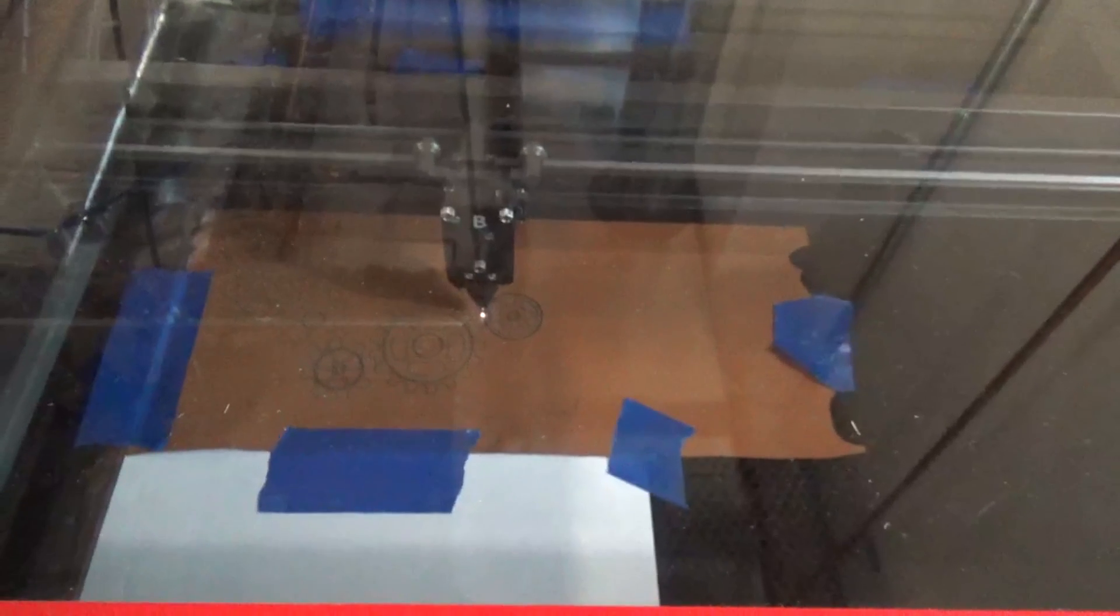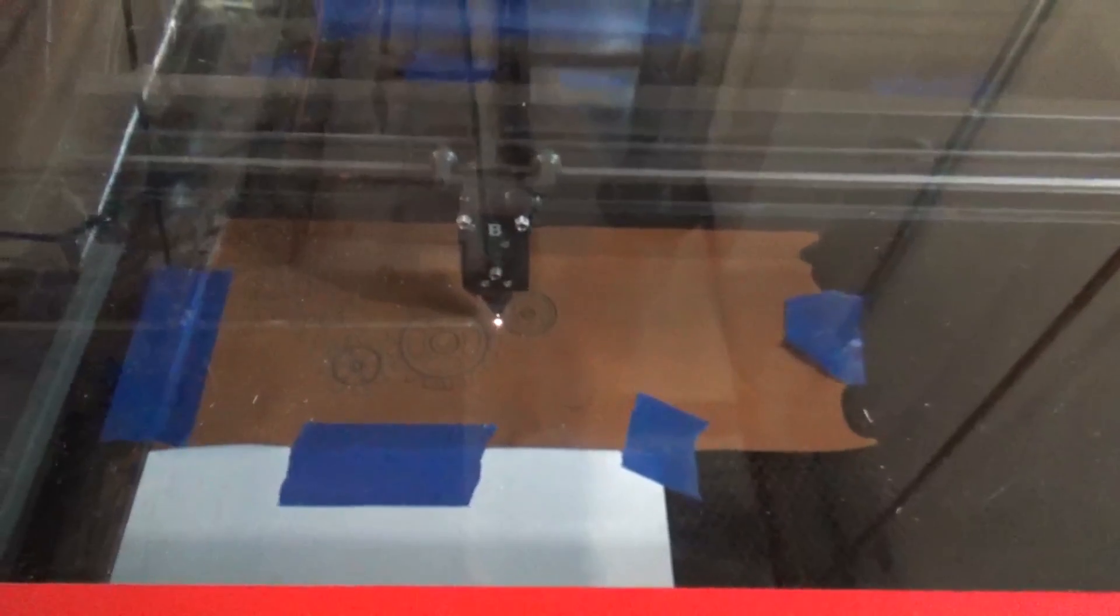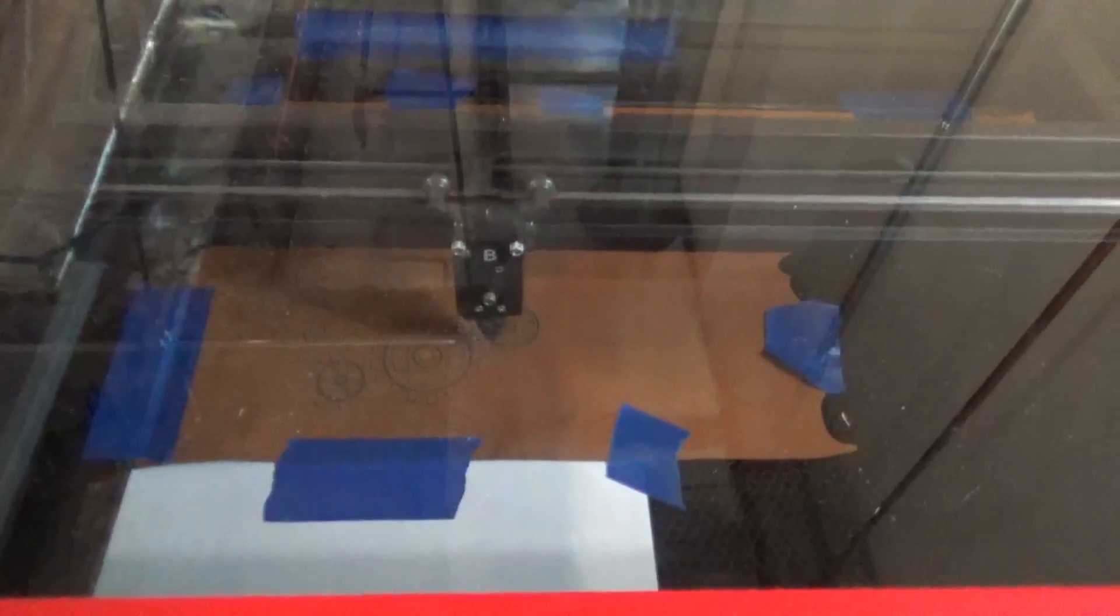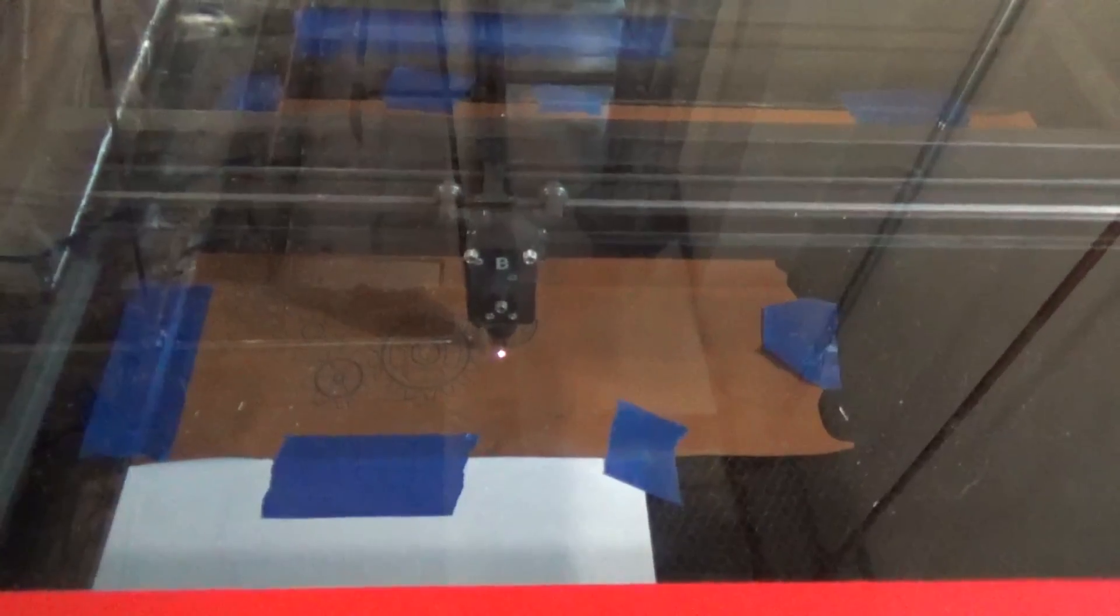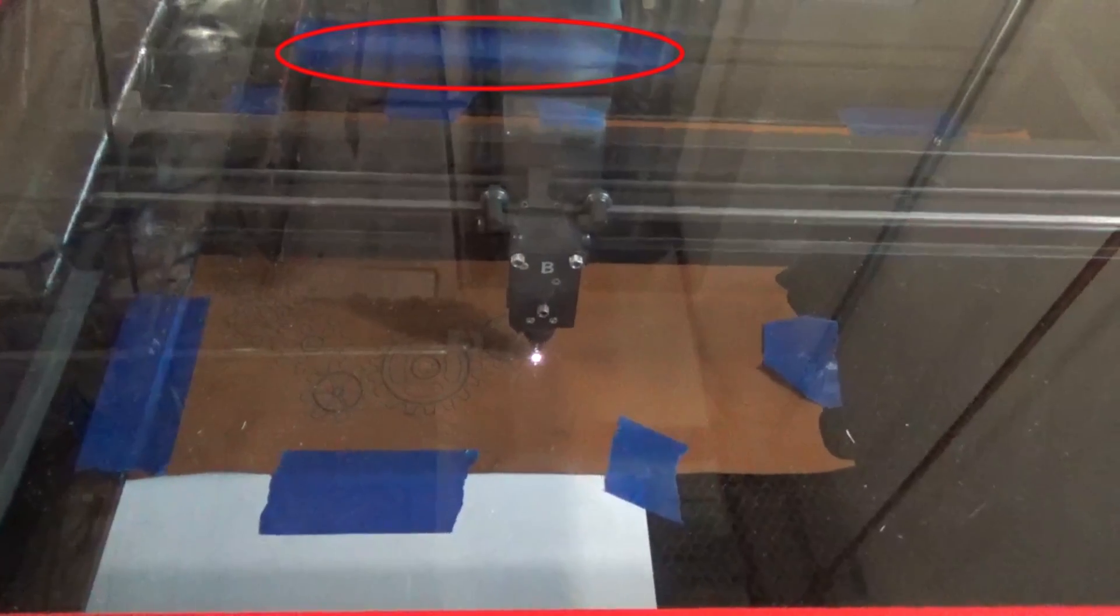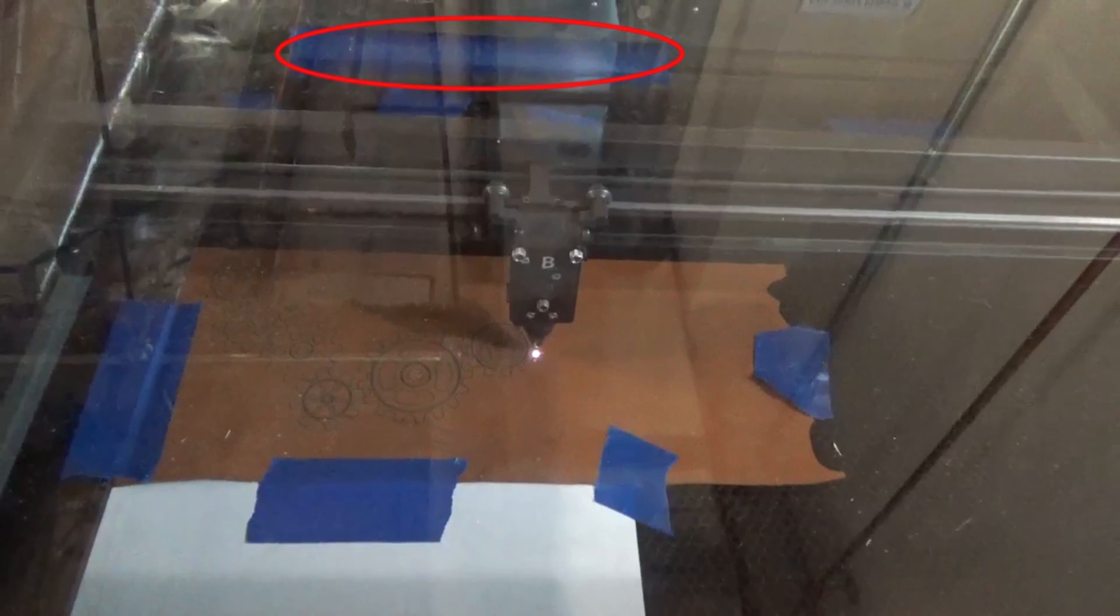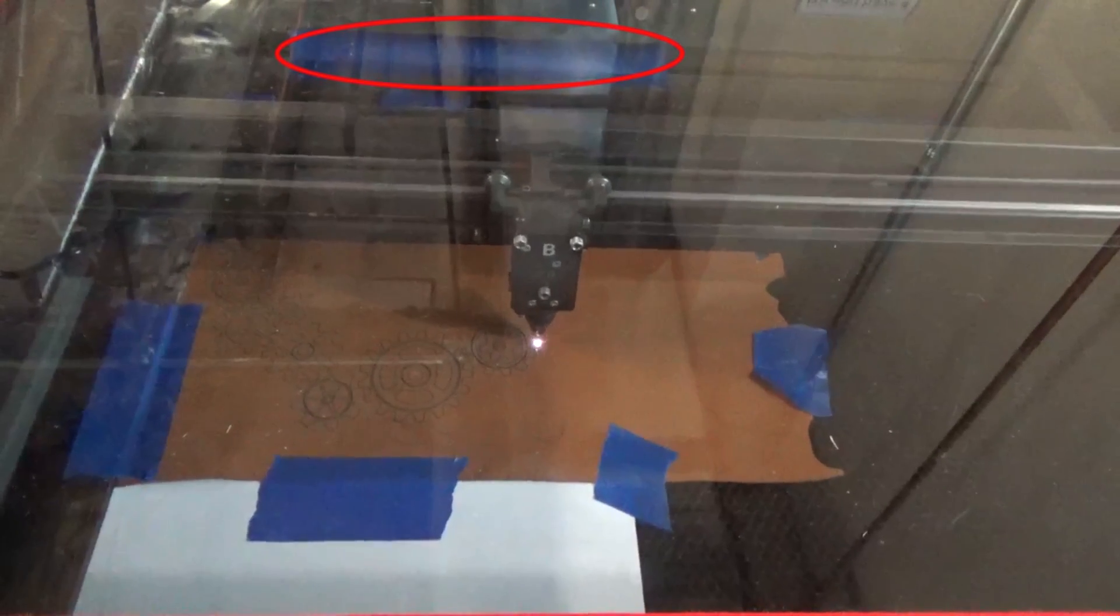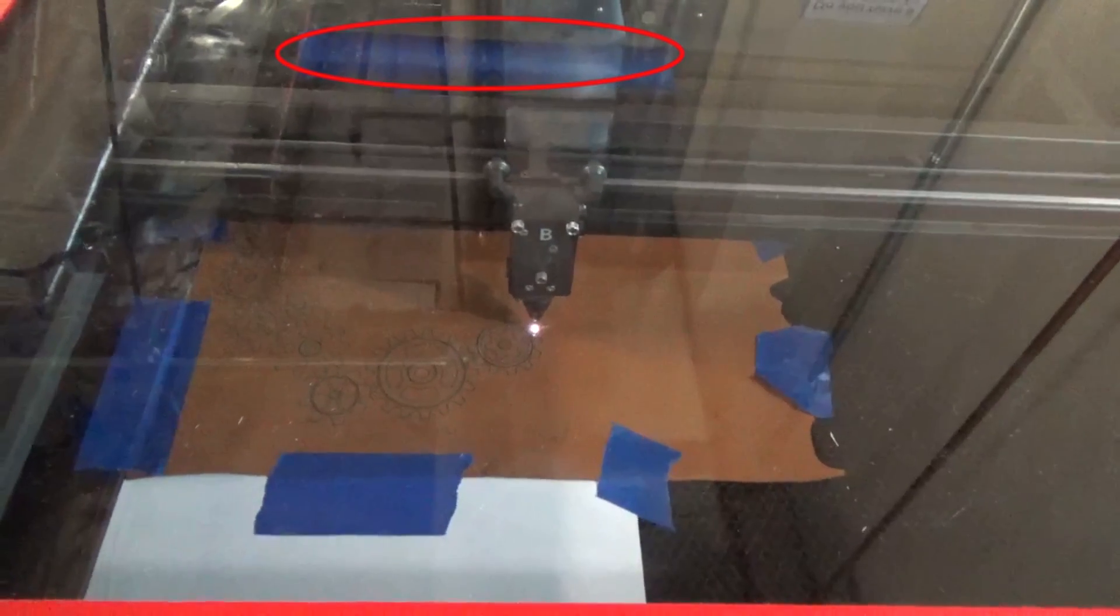Because leather is floppy, there are several precautions that are good to take when you're going to be cutting on the laser. First, I used temporary adhesive to adhere it to some white cardboard to help hold it down. Then I used blue masking tape, not only to put the leather down, but to cover the vent in the back. See the circle?